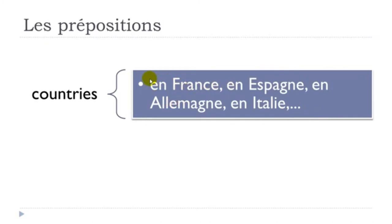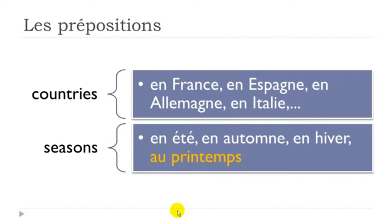When talking about seasons, we have four seasons, and as usual in French there is one exception. But for three of them, we use 'en': en été — in summer, en automne — in autumn, and en hiver — in winter. The one exception is 'au printemps' for spring.